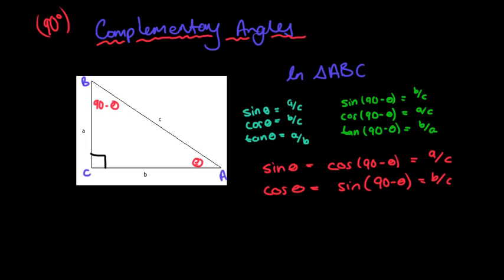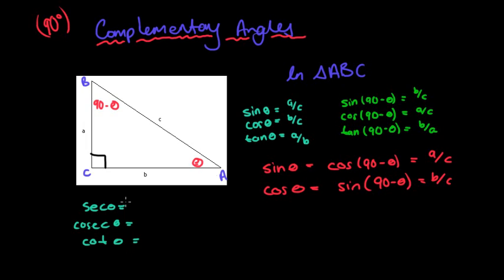We also learned a few more trig ratios: sec theta, cosec theta, and cot theta (cotangent). Sec theta is 1 over cos theta, so it's c over b. Cosec theta is 1 over sin theta, so it's c over a. Cot theta is 1 over tan theta, so it's b over a.